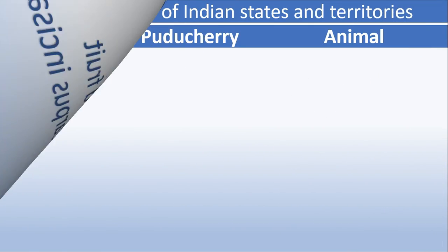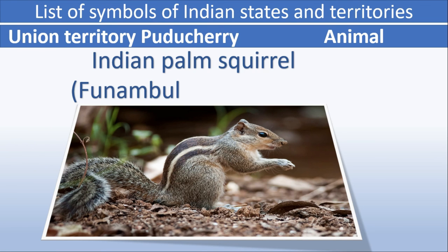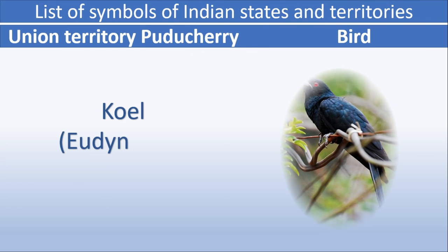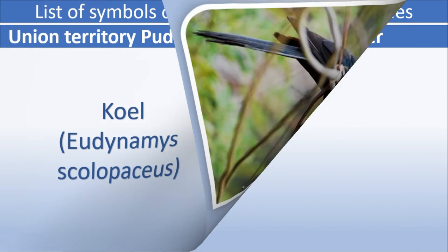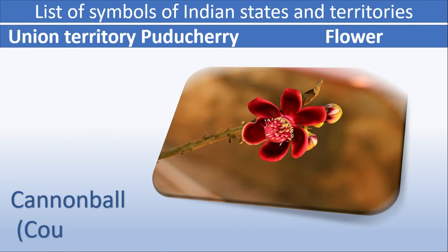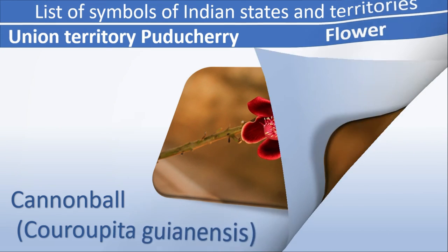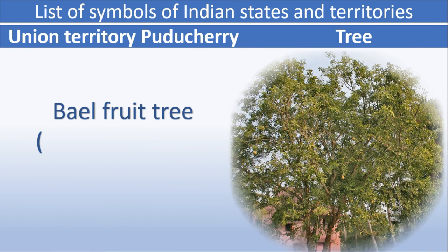Puducherry animal: Indian Palm Squirrel. Puducherry bird: Koel. Puducherry flower: Cannonball. Puducherry tree: Bell Fruit Tree.